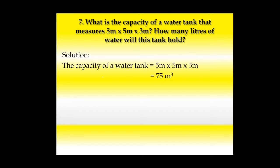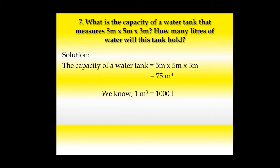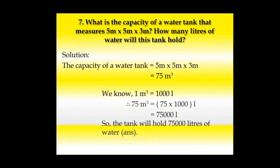Now look at the second part: how many liters of water will this tank hold? To convert from cubic meters to liters, we need to know the relation: 1 cubic meter equals 1000 liters. So we multiply: 75 cubic meters × 1000 = 75,000 liters. The tank will hold 75,000 liters of water.